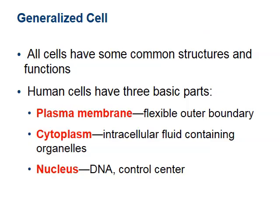Even with 200 different cell types, there's a generalized cell structure with three core components. First, the plasma membrane separates the external from internal environment. Second, the cytoplasm is the intracellular fluid — 'intra' means inside, 'cellular' means cell — and organelles float in it. Organelles are mini compartments made of molecules. Third, most human cells have a nucleus, which contains DNA, the control center of the cell.